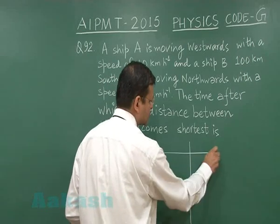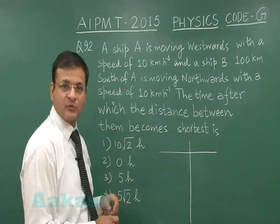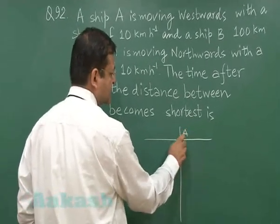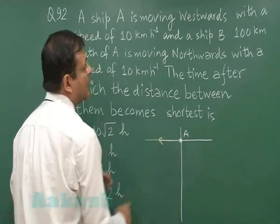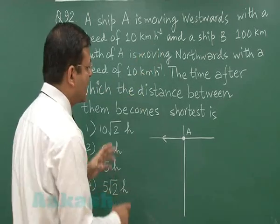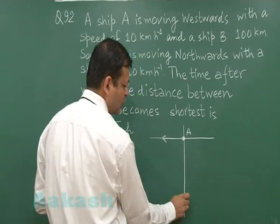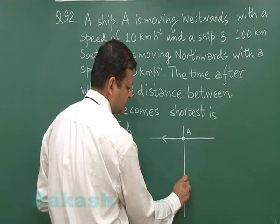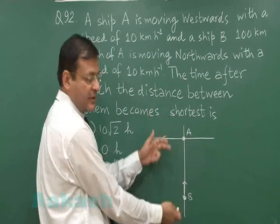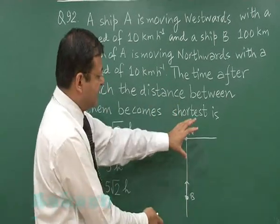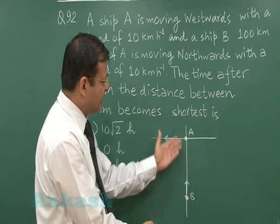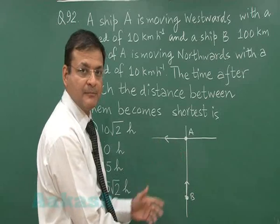It is something like you have a crossroad. Ship A is here and this direction you have taken as west. It has a velocity of 10 km/h, as written here, and ship B is 100 km south of it and is moving northwards. The distance between A and B is given as 100 km. A is moving to the left with speed 10 km/h and B is moving towards north with the same speed.